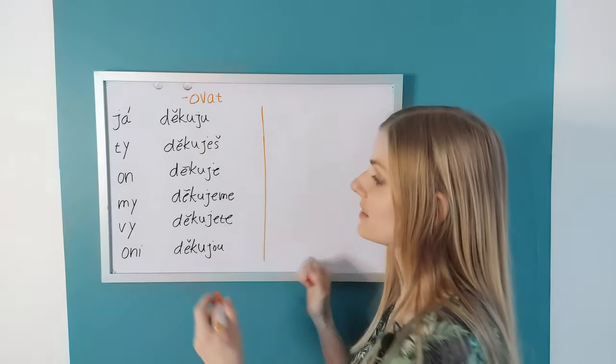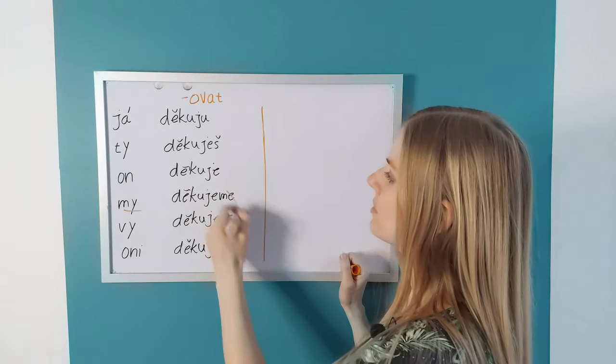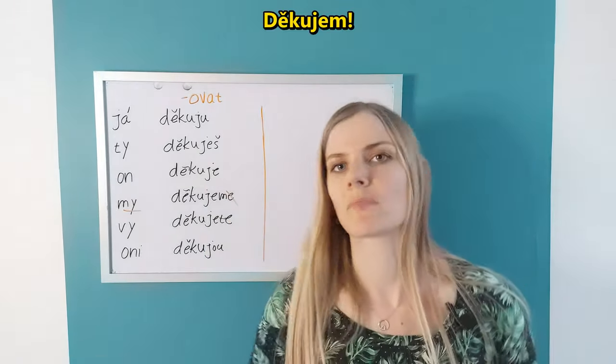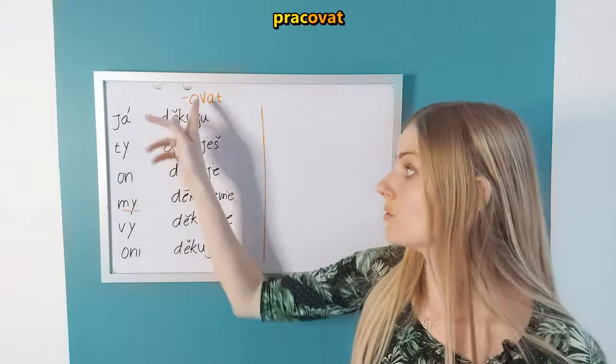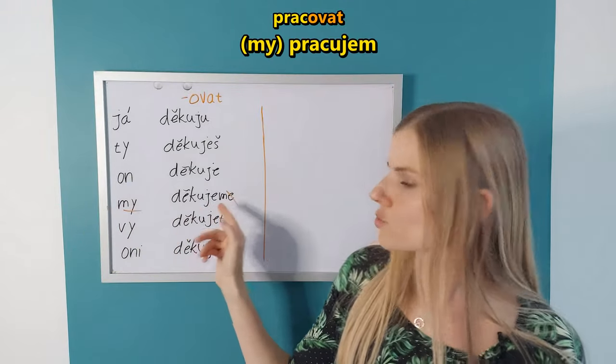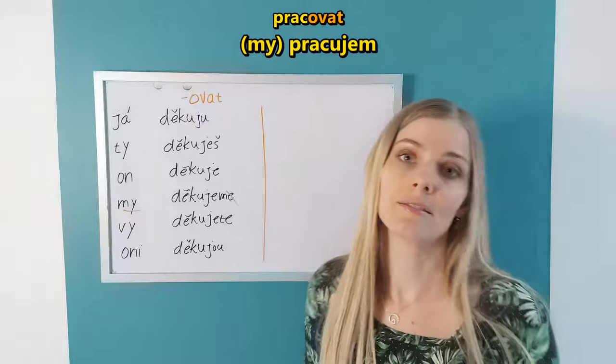Only one form is affected and that would be my. In common Czech we drop the E and we just say děkujem. We thank you. When you think about another verb, for example pracovat, it would be pracujem. So M at the end without the E.